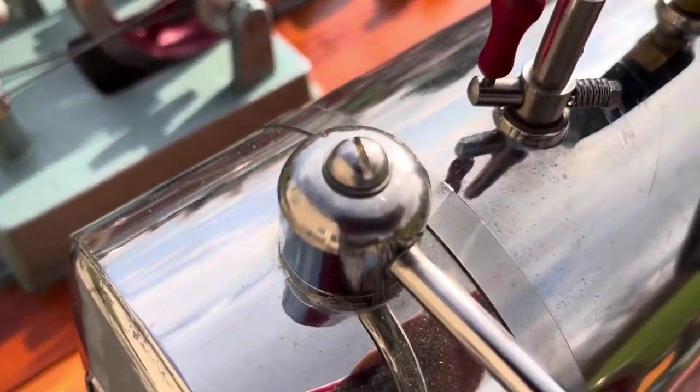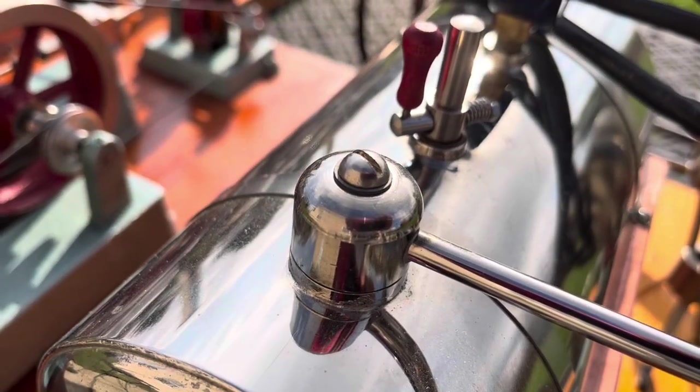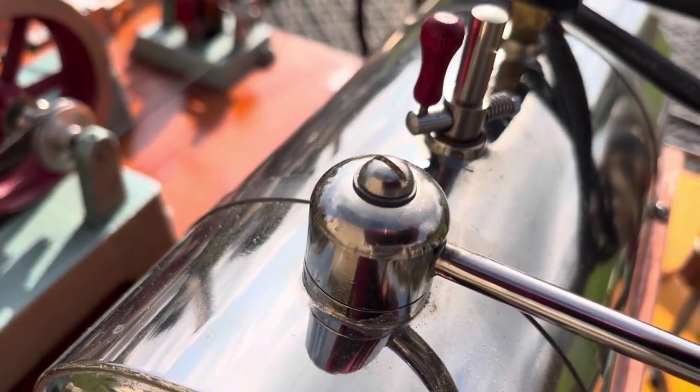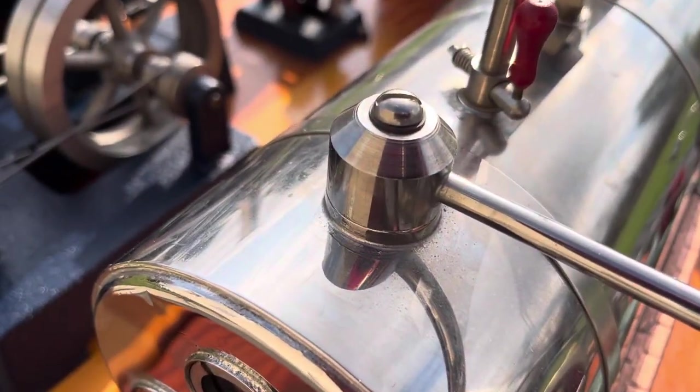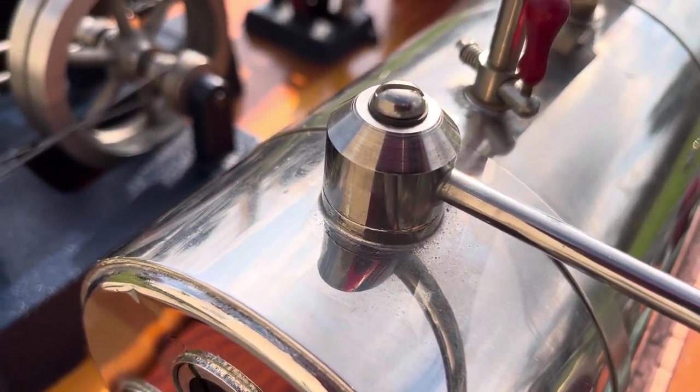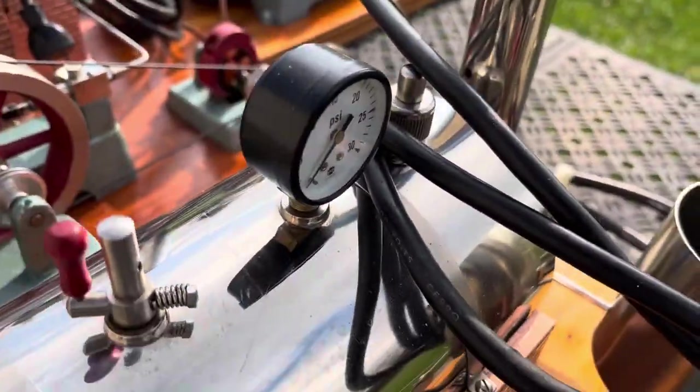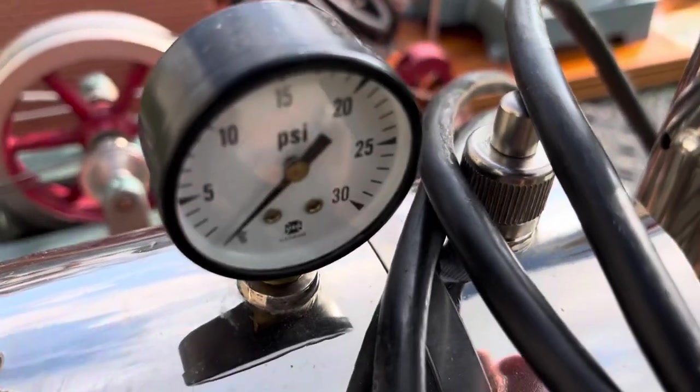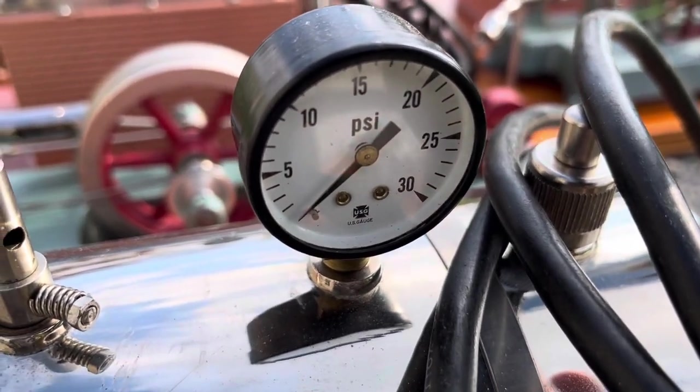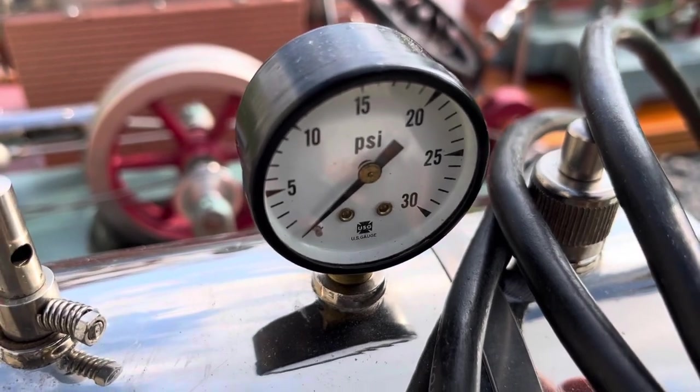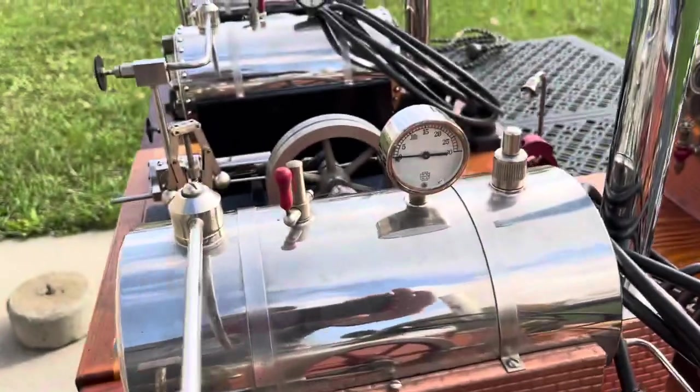The steam dome has changed its shape. Now it's kind of a rounded, bullnose style, where these were kind of cone-shaped, the earlier ones. The gauge now is black again. And the range of the numbers goes almost all the way around where the other ones were 180 degrees.